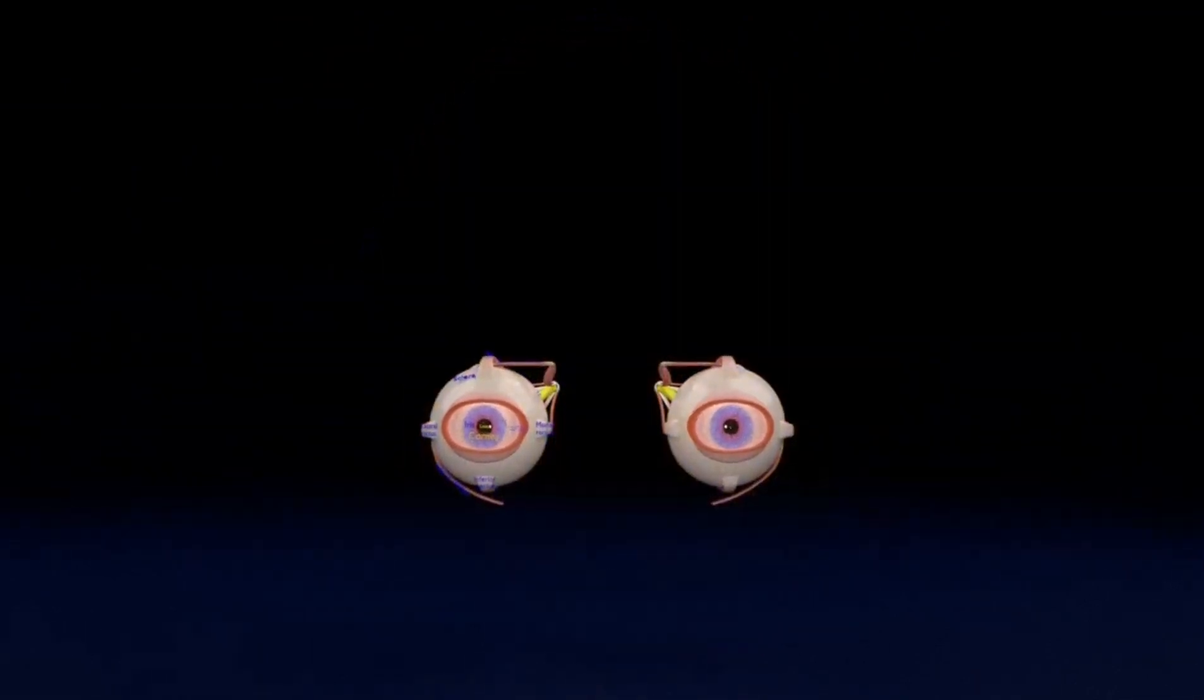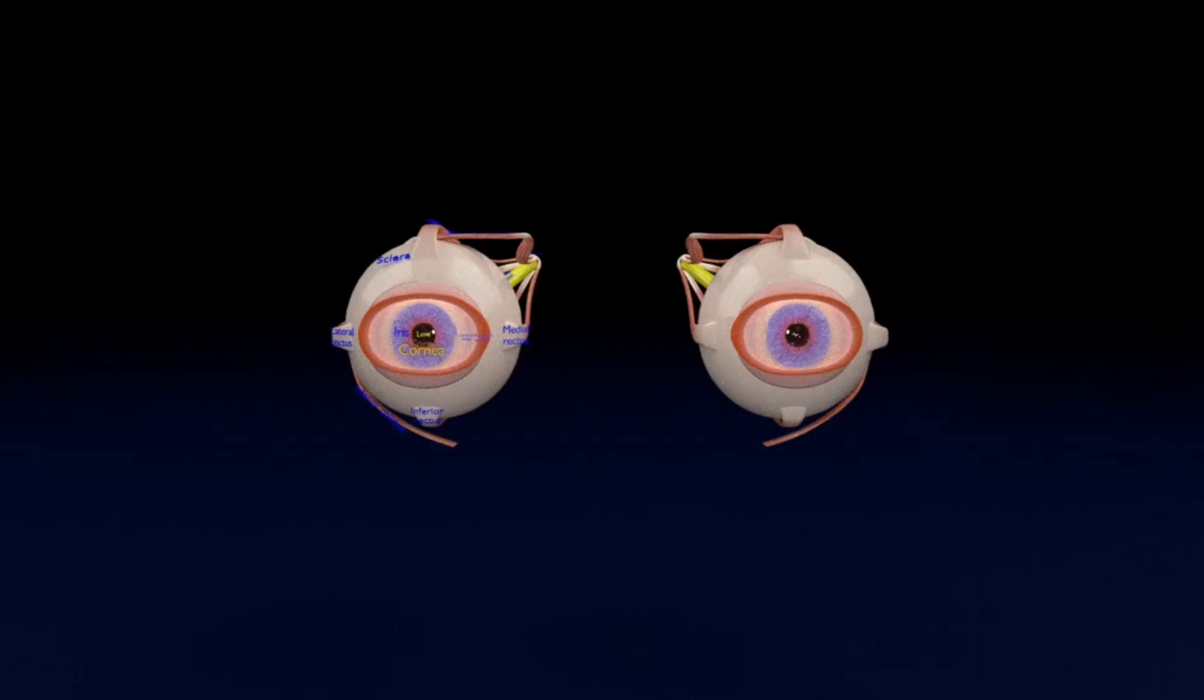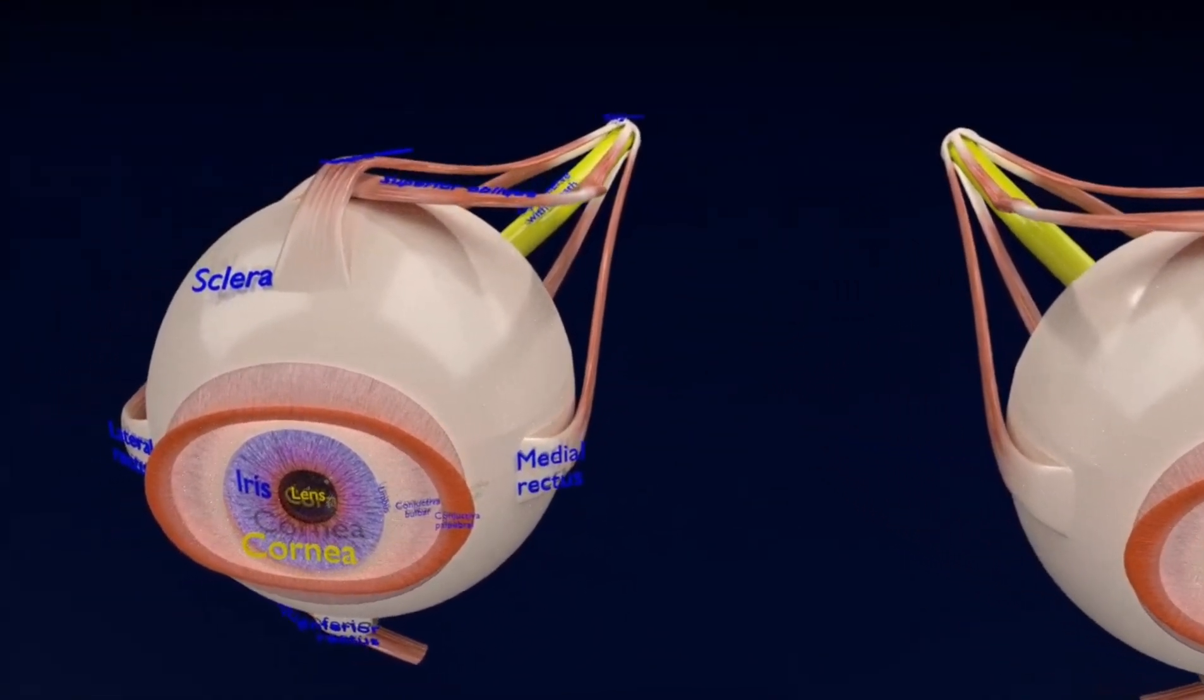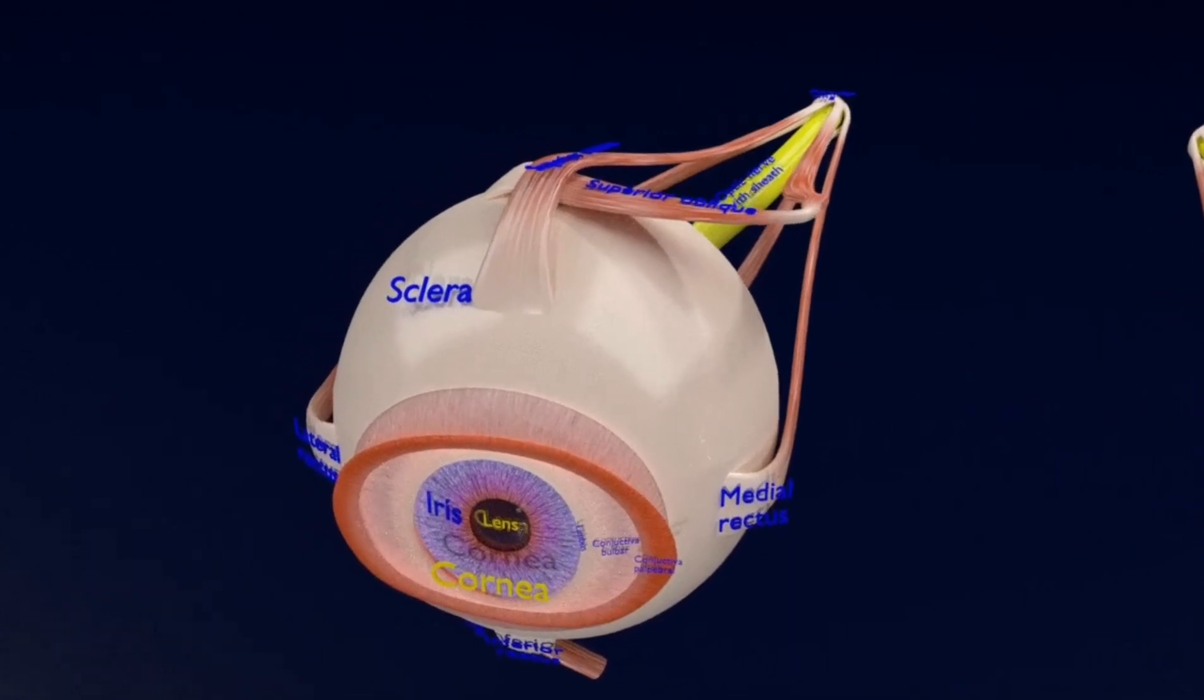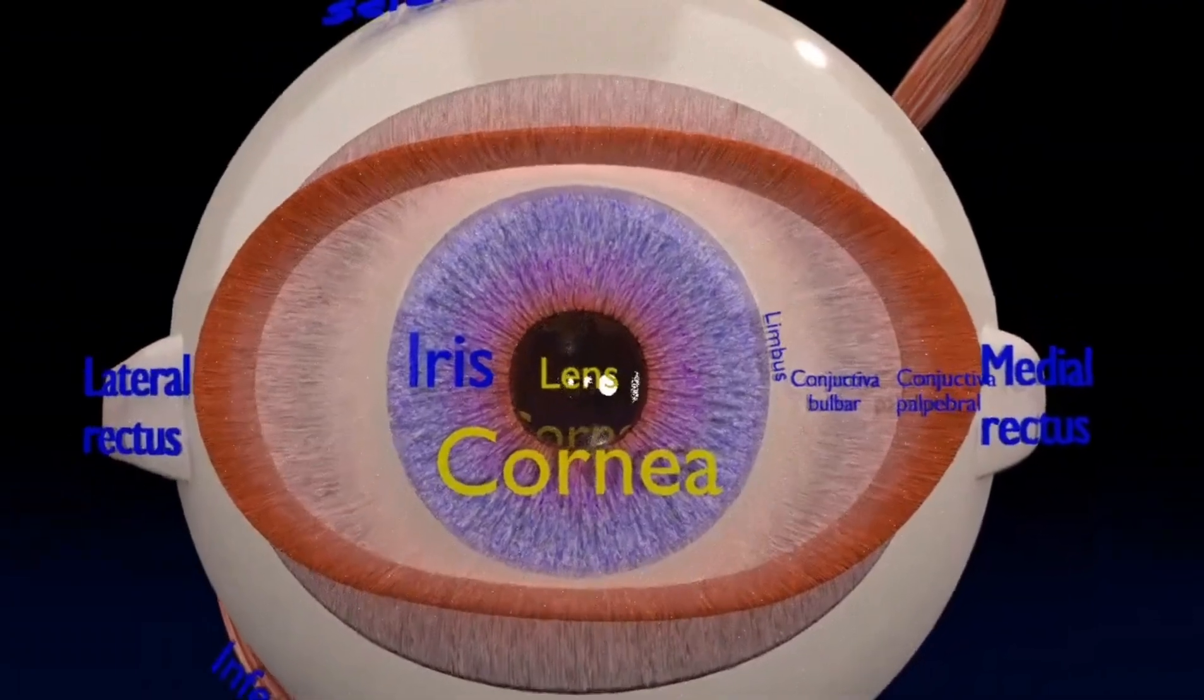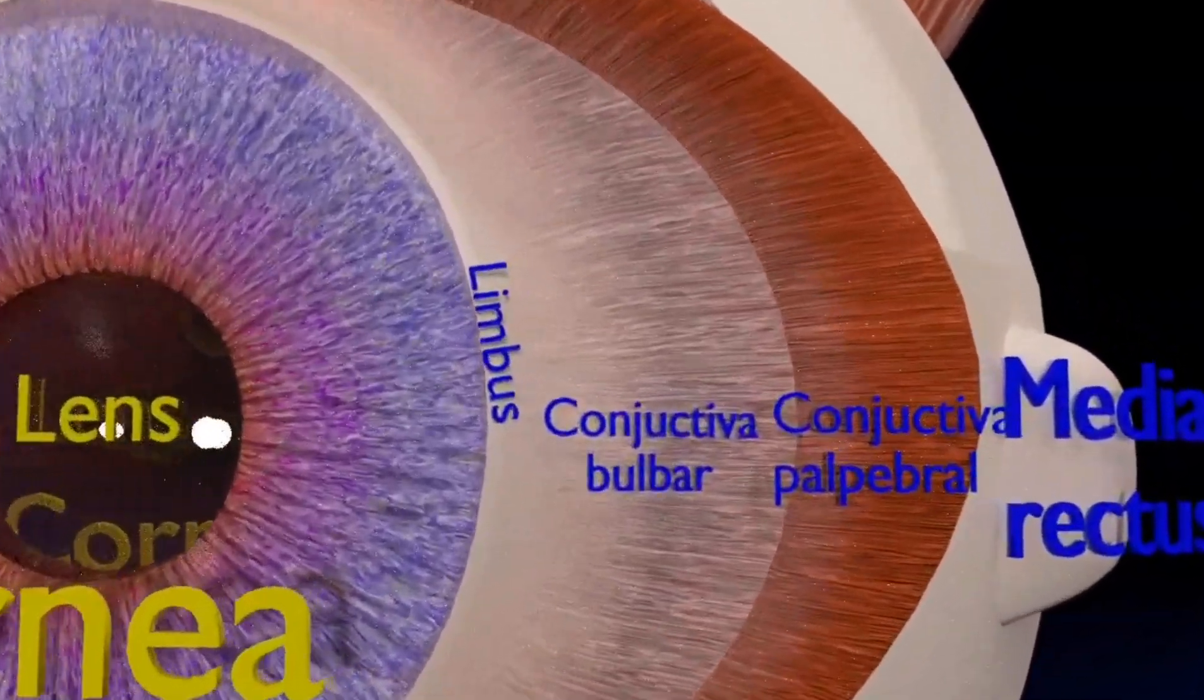Now, after removal of the surrounding bones and fat, you can see both eyes. The anteriorly visible part of the eye is the conjunctiva, which is palpebral and bulbar part, which covers the sclera and stops at the limbus, which is the junction between the cornea and sclera.